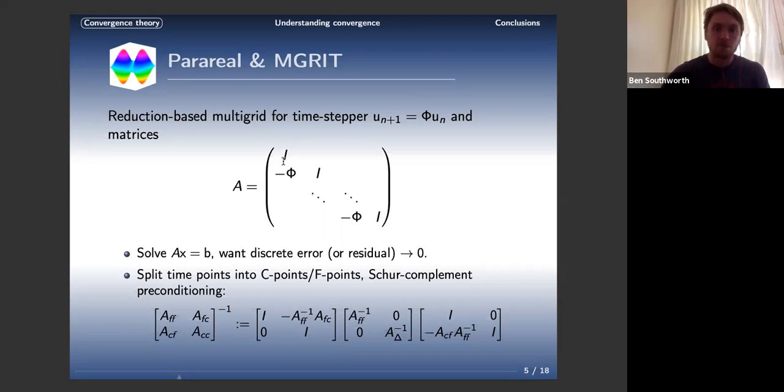I want to motivate the preconditioner by just looking at the Schur complement, because that's really what we're doing in parareal, at least in the linear case. If we take our time points and split them into C-points and F-points, reorder the matrix, we can write out the 2x2 inverse of a matrix A_FF, A_FC, A_CF, A_CC in this block LDU form. The A_FF inverse is exactly what everybody's familiar with - it's the F-relaxation, fine-grid time-stepping.